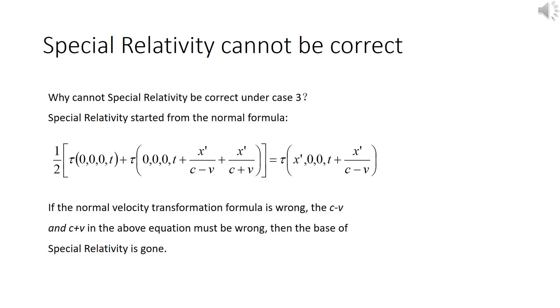Here is the first equation of special relativity. Did you see the c + v and c - v there? They came from the normal velocity transformation formula. If the normal formula is wrong, then everything based on it is wrong, including special relativity.